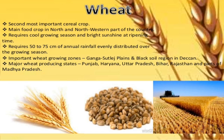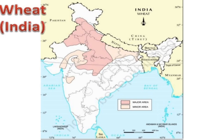Wheat requires 50 to 75 centimeters of annual rainfall evenly distributed over the growing season. Important wheat growing zones are the Ganga-Sutlej plain and the black soil region in the Deccan. Major wheat producing states are Punjab, Haryana, Uttar Pradesh, Bihar, Rajasthan and parts of Madhya Pradesh. If you see on this map, you will find that from the top northern areas: